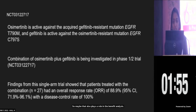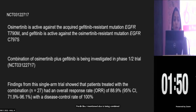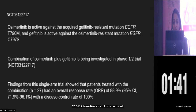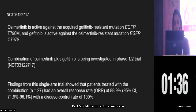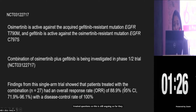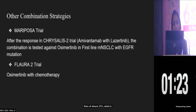Coming to the third-generation EGFR TKI, osimertinib is being combined with gefitinib. Why? Because gefitinib has activity against the C797S mutation, and osimertinib, of course, acts against T790M. So this combination can potentially overcome the resistance seen in previously osimertinib-treated patients. This is still ongoing; so far they have treated 27 patients, of whom they found a response rate of almost 89%, which is impressive.